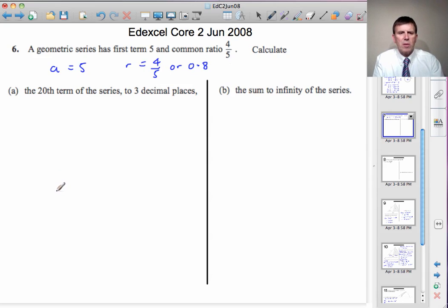Calculate the 20th term of the series to 3 decimal places. Well, first of all, we need to recognize that the nth term of the series is A times R to the power n minus 1.